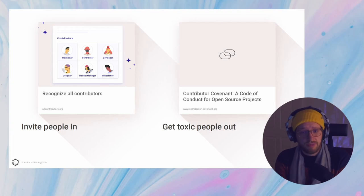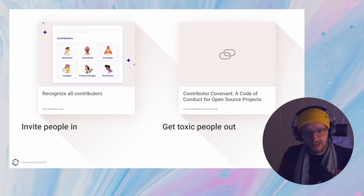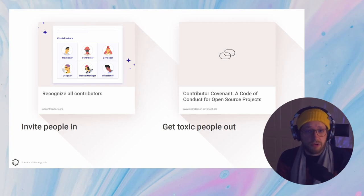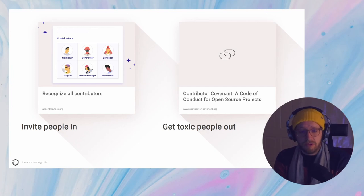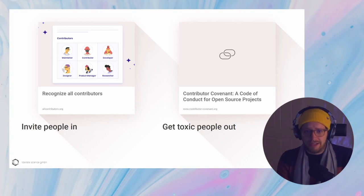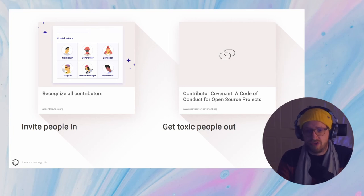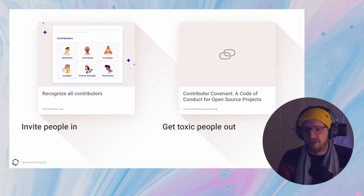We need to really understand where barriers come from to make things truly open. That also means we need to get toxic people out of these spaces, because toxic people create barriers even if they're not part of a project's core team — they can become a barrier for other people. So it's very important to think about how you prevent others from becoming a barrier. Codes of conduct are very important here, but it needs to be thought through how you utilize them and how you create and curate a barrier-free community — how you socially construct the space in which you try to make research accessible.